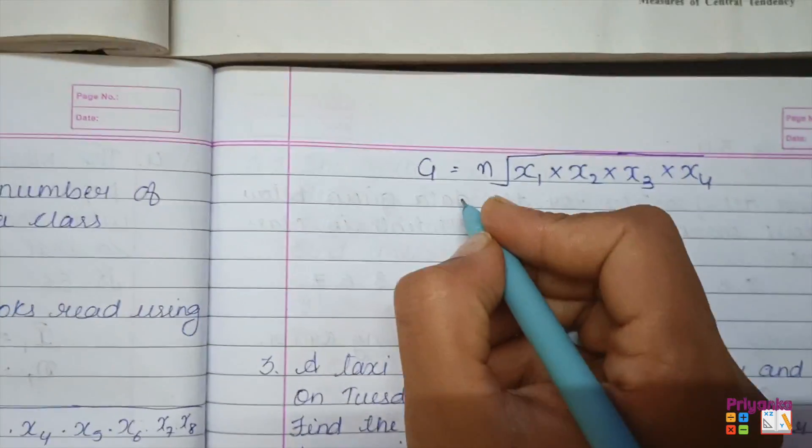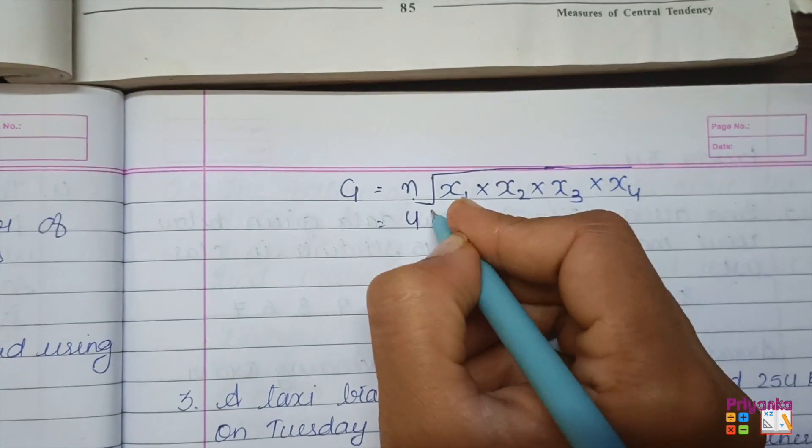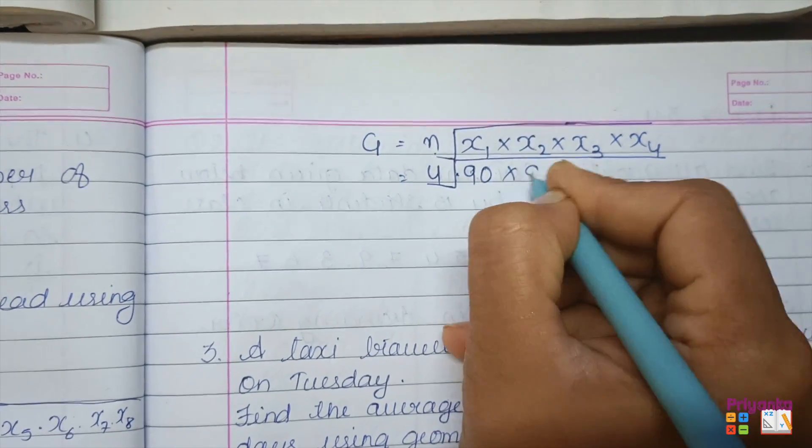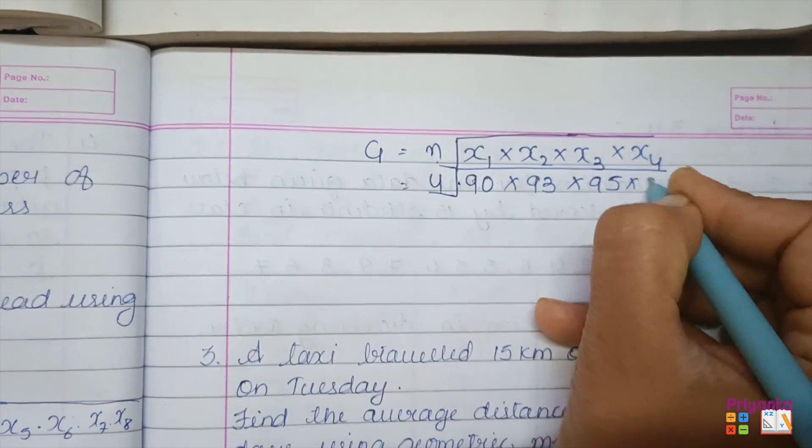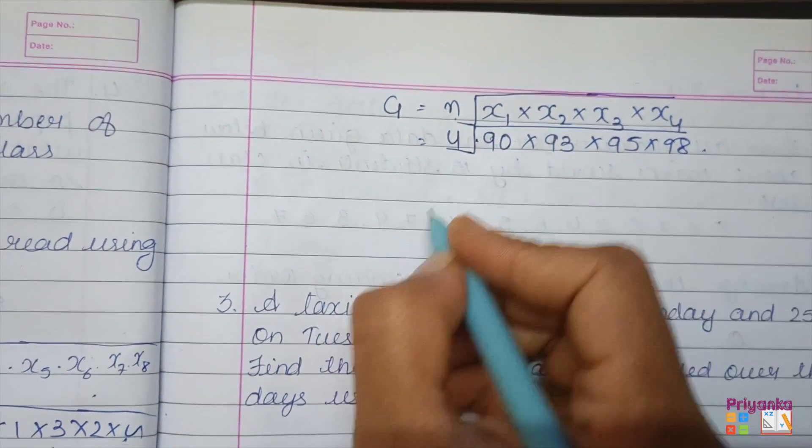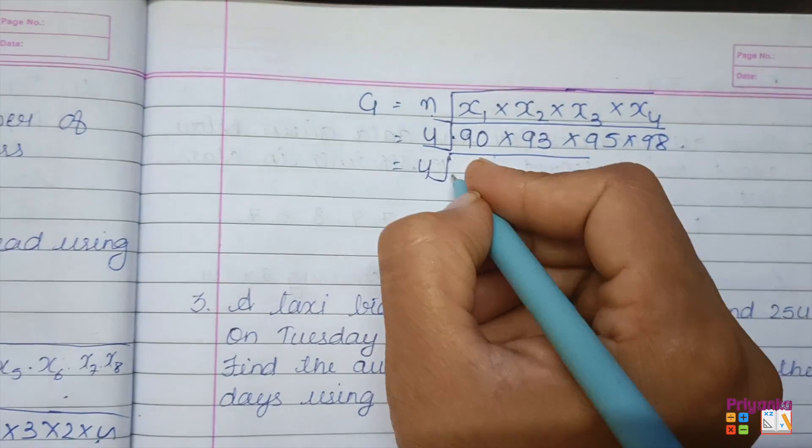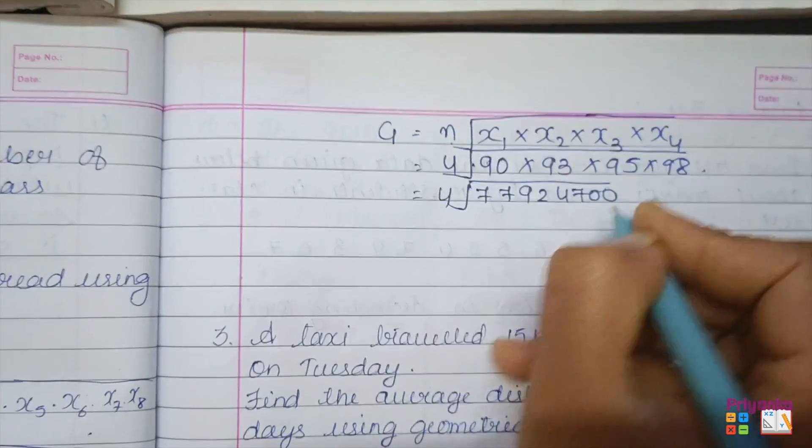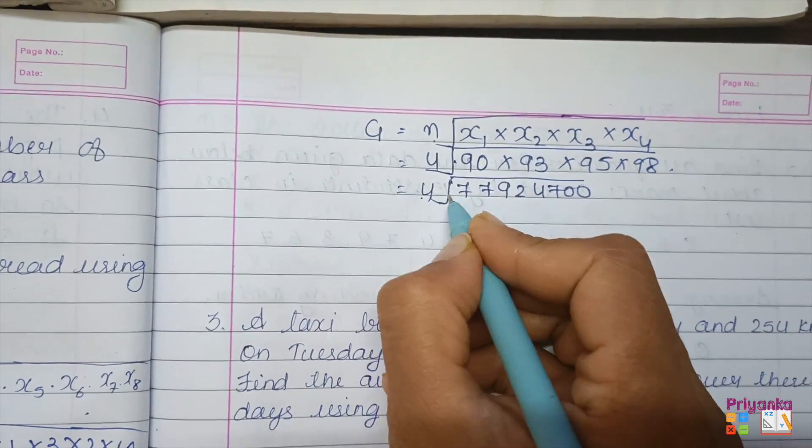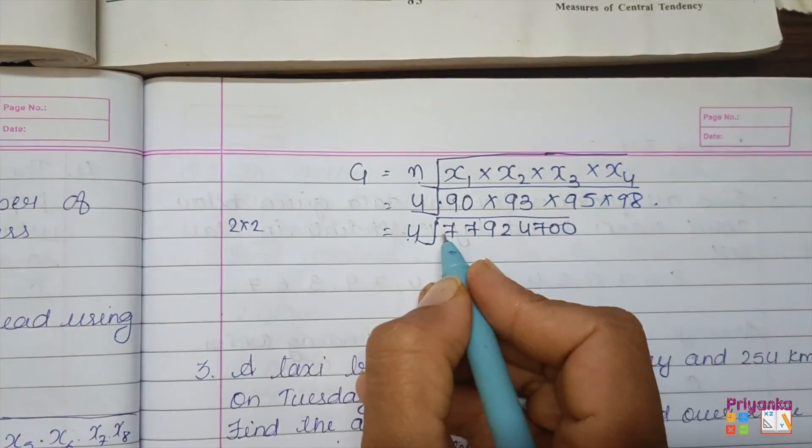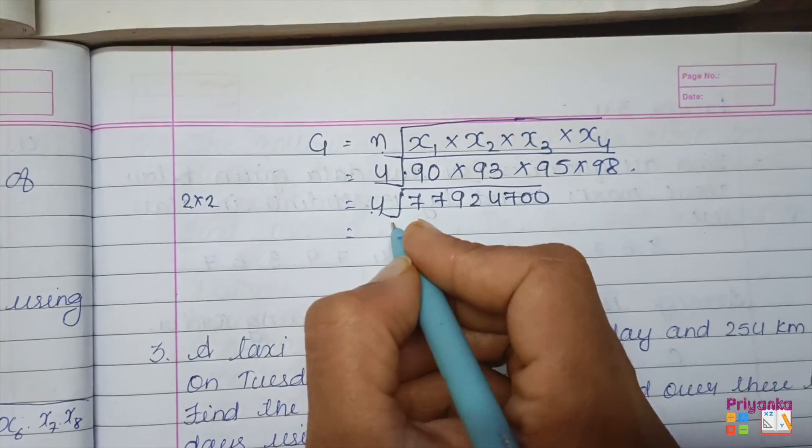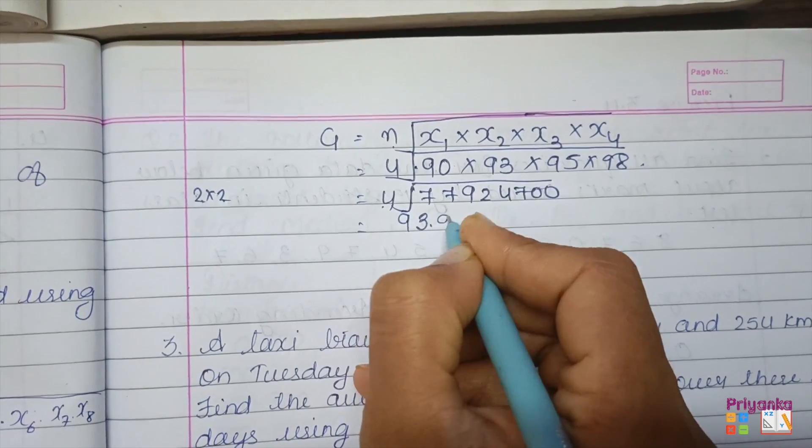Now by taking this information into the formula, that is for the geometric mean, where we found the n, that is 4 - the number of 4 years information. And the information after depreciation is 90 × 93 × 95 × 98. Get them multiplied. That is 7,792,470.